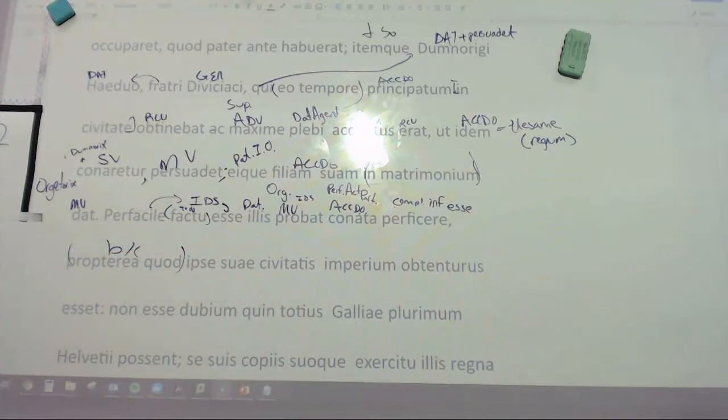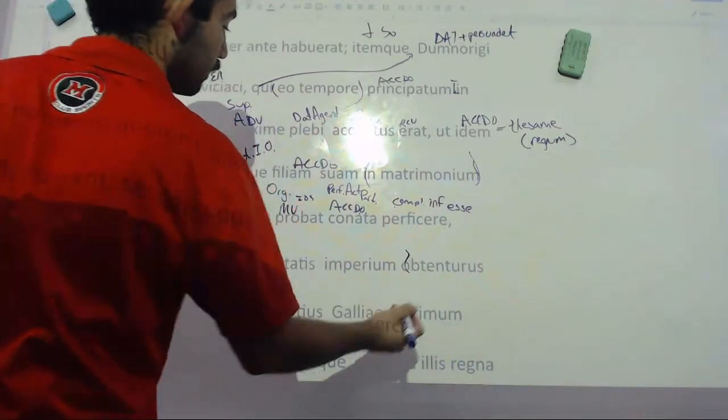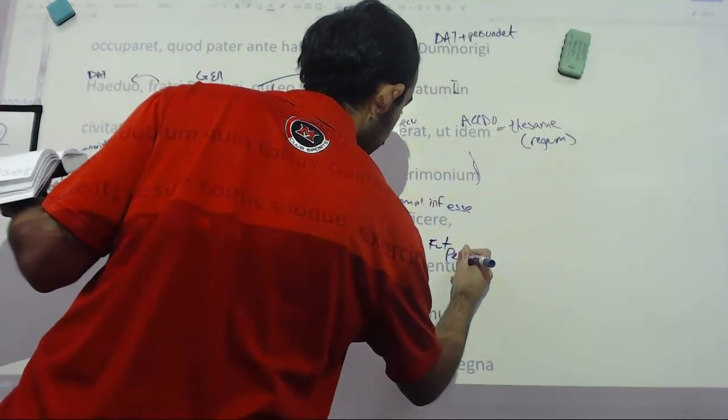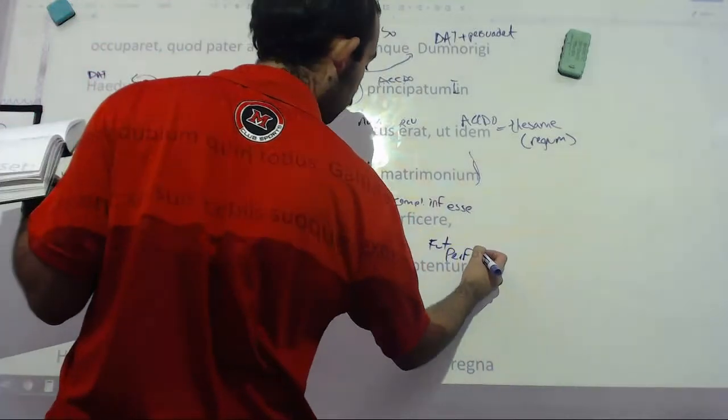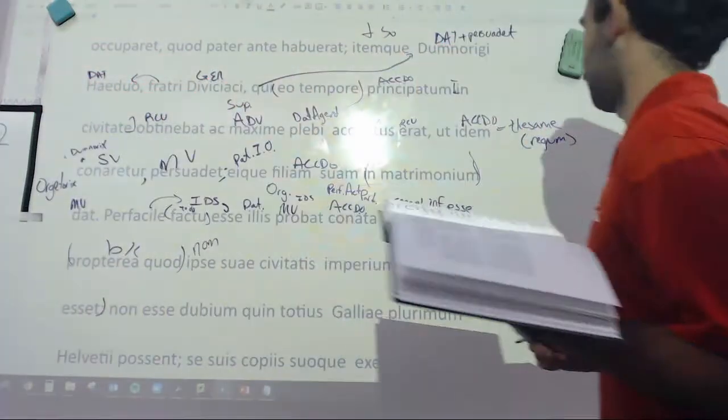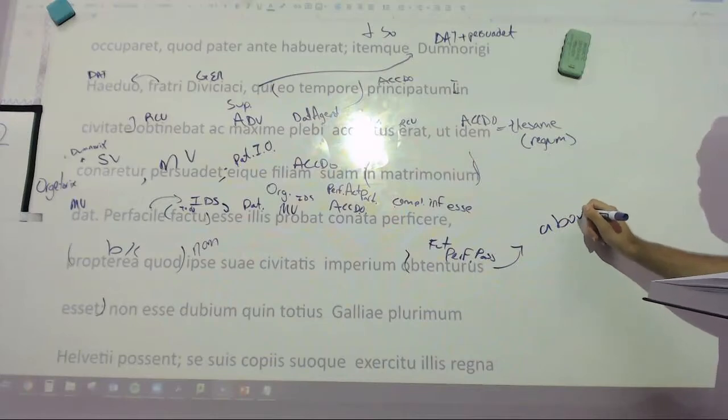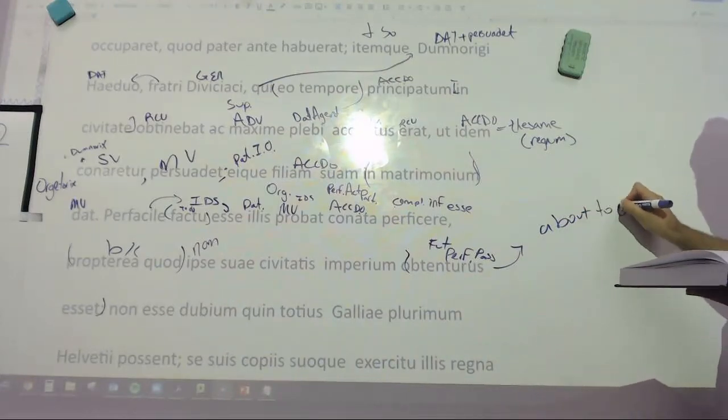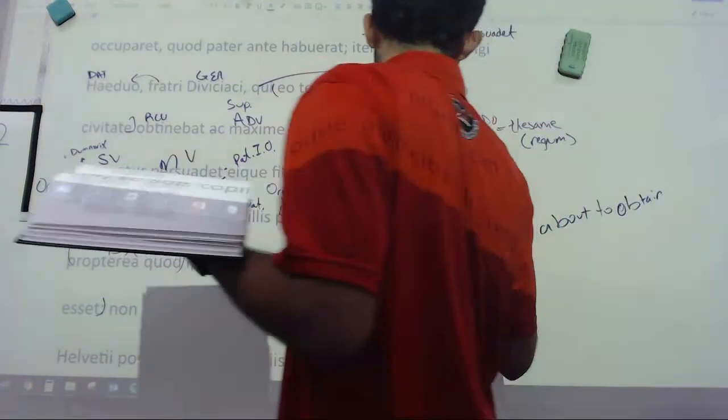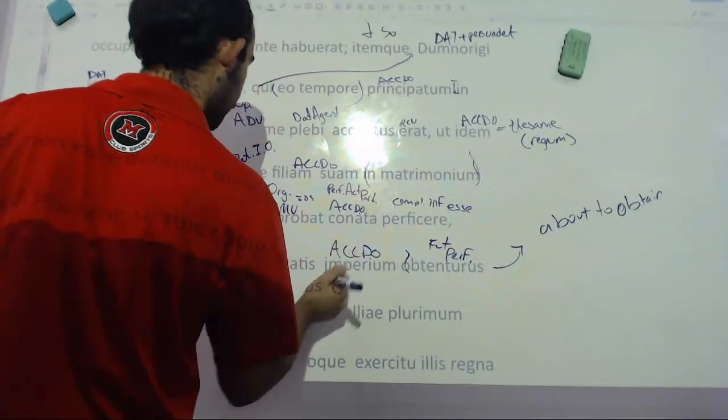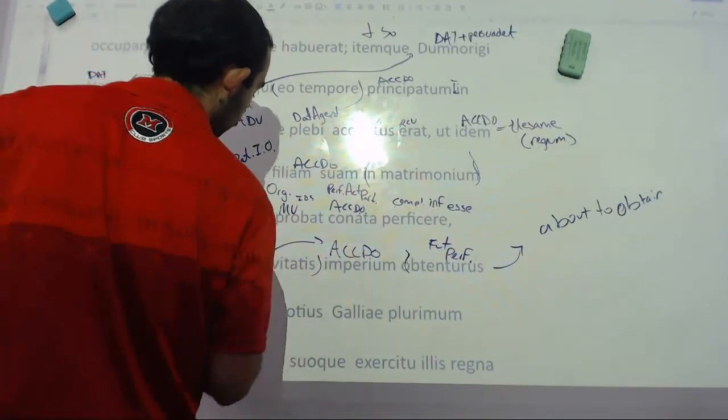Esse, that it's very easy for them to perficere, to accomplish, and then this is our accusative subject, these things having been attempted, this is a perfect active participle, for them, by or by them, dative sibi, because propterea quod means because, he himself, this is our nominative ipse, suae civitatis imperium obtenturum esse. Because, and I think the book here has a great, in as much as he was going to take over supreme authority in his own state. He was about to, and this is a future perfect passive form, which is really odd. This is obtenturum esse is, that he was about to obtain imperium, is our direct, or it's not passive, it's just a future perfect form, empire of his state. That's generally, that's what the book is saying, it's a really weird phrasing, I don't like it personally.